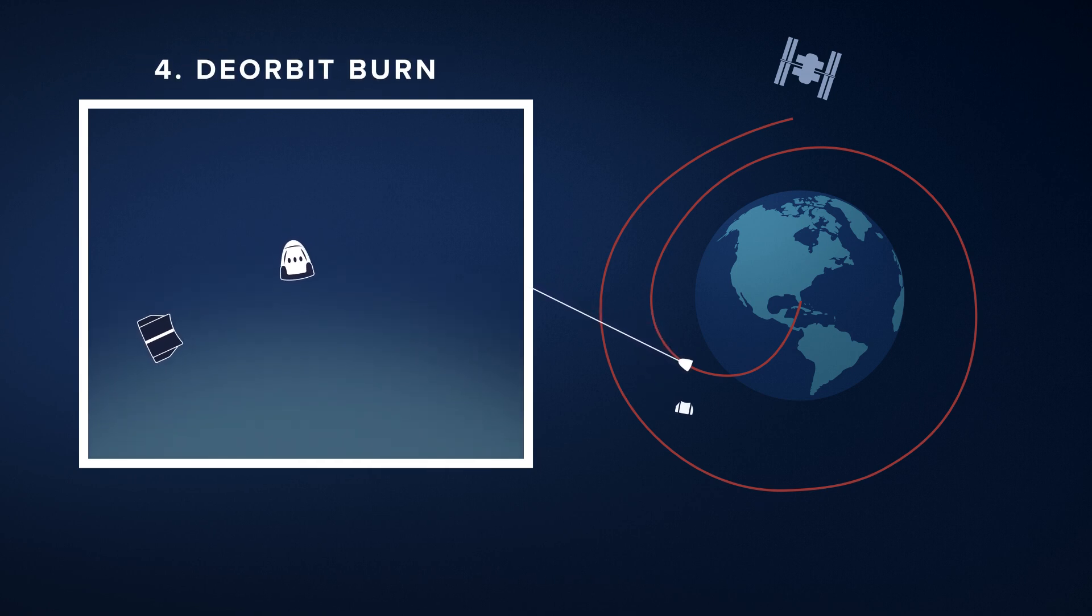Fast. Crew Dragon will enter the atmosphere around 17,000 miles per hour.